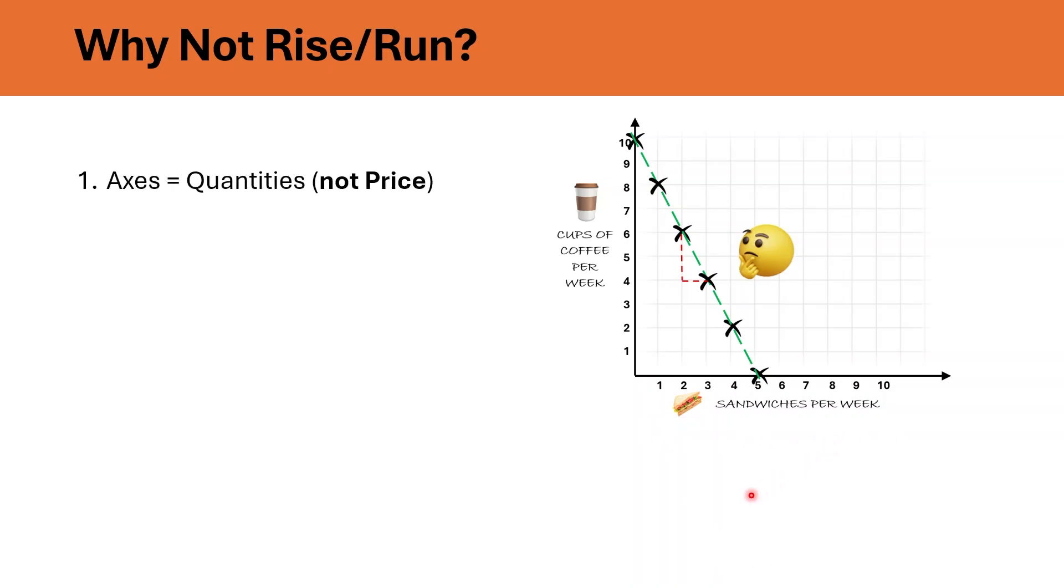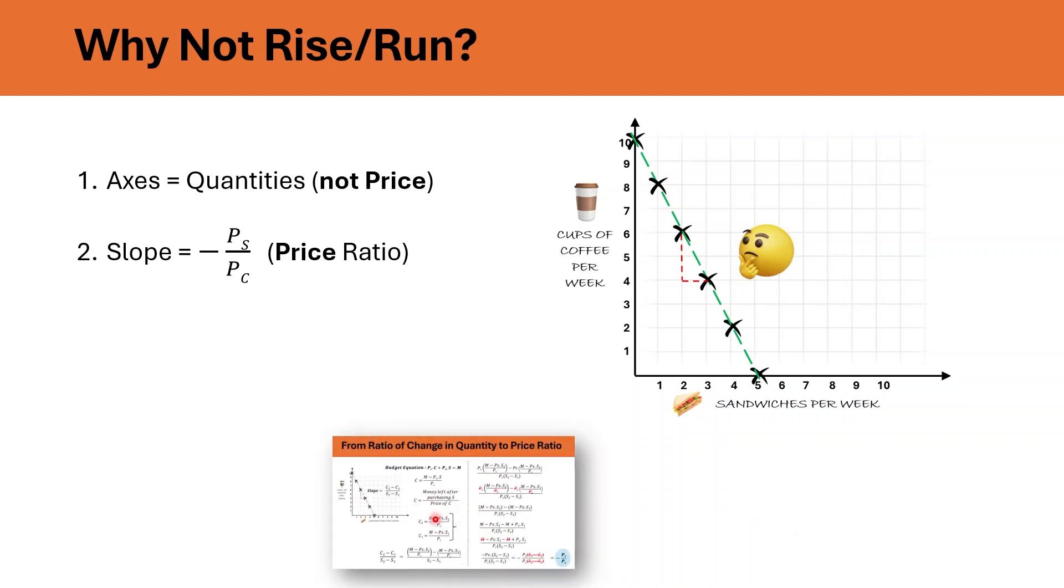Pay attention to the x's. They show quantities of goods and not the price. And the slope of the budget line reflects the price ratio, but it's represented as run over rise to show the opportunity cost of choosing between two goods. We can also mathematically derive that slope is equal to minus PS upon PC from our original budget equation.